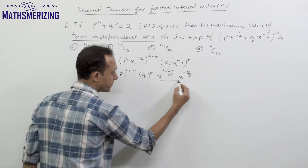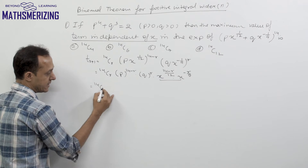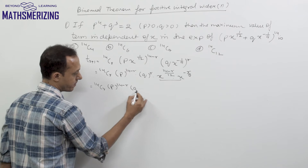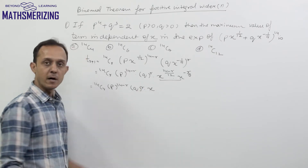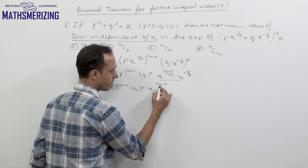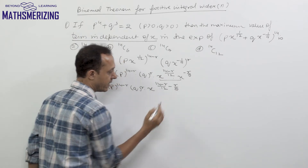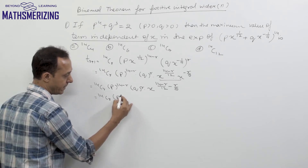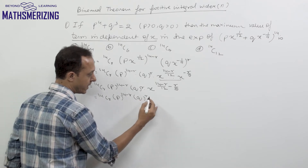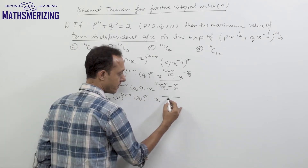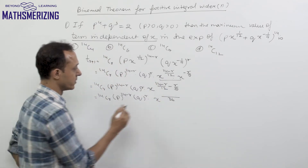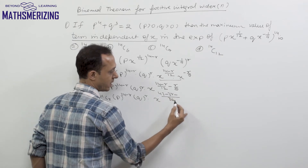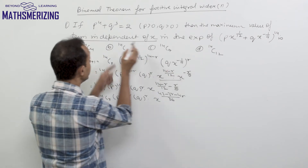Taking the x terms together, I write 14Cr · p^(14-r) · q^r · x^((14-r)/12 - r/9). Taking the LCM of 12 and 9, the exponent of x becomes (3(14-r) - 4r)/36, which gives (42 - 3r - 4r)/36 = (42 - 7r)/36.